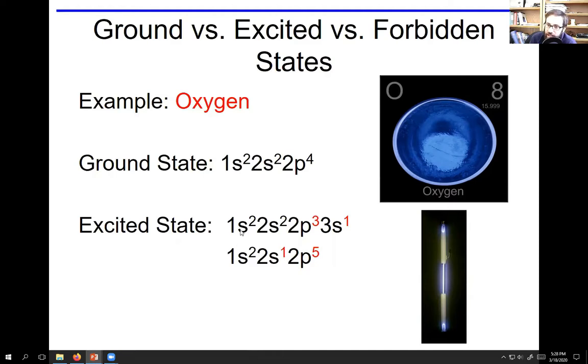Excited state would be something like this: 2p⁴ got excited, one of those electrons went to 3s¹ - higher energy, 2p⁵. Or one of the 2s orbital electrons went to 2p⁵. That'd be an example of excited state, something that would happen during a chemical process.